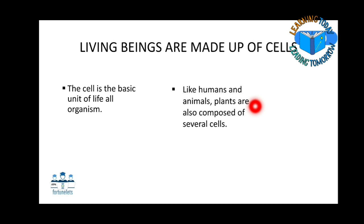First characteristic — living beings are made up of cells. You must have seen how a house is constructed — several things such as brick, cement, water, steel, and wood are arranged in order. Similarly, the body of a human being is also made up of cells. A cell is the basic unit of all living organisms.